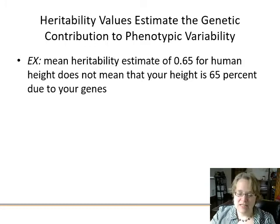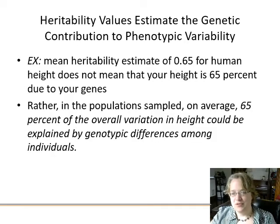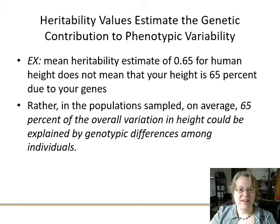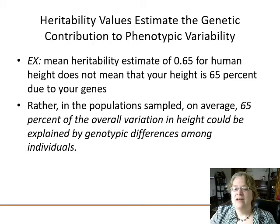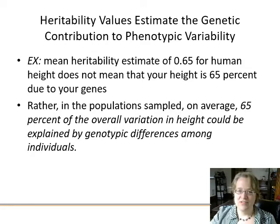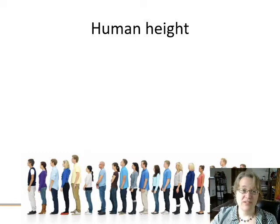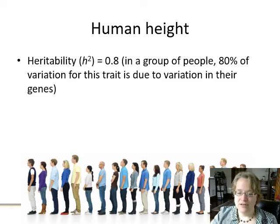Heritability values estimate the genetic contribution to phenotypic variability. If your heritability estimate is 0.65 for human height, it doesn't mean your height is 65% due to your genes. Rather, in the population sampled, on average 65% of the overall variation in height can be explained by genotypic differences between individuals — 65% of the variation is explained by having a different genotype than someone else.